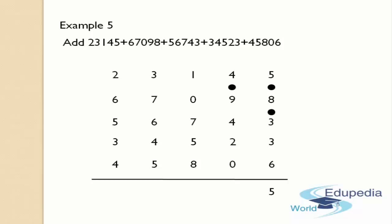7 should be added to the next number, that is 4. Now 7 plus 4 gives 11, which is also a two-digit number, so again leave 1 and place a dot on the number 4. The remaining number 1 should be written in the answer's place. Now count the number of dots in the second column, that is the tens column — there are 2 dots.